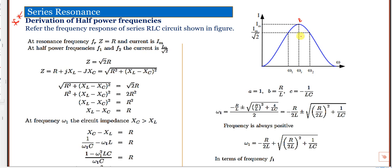At omega 1 and omega 2, we have the half-power frequencies. At these two points, the value of Z is equal to root 2 times R. At maximum, current is I_m, and at the half-power frequency it is I_m divided by root 2.